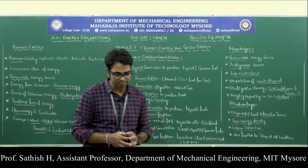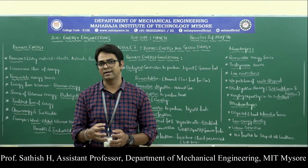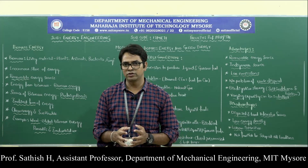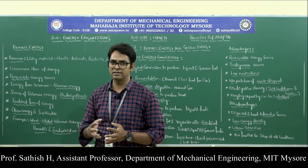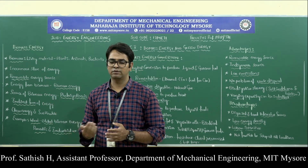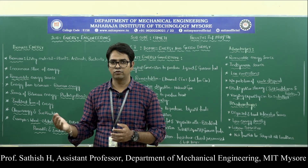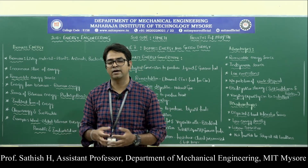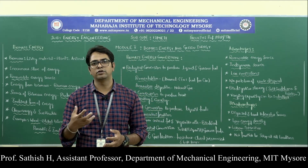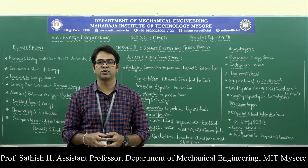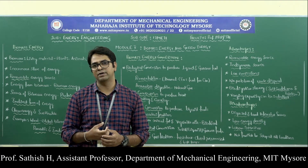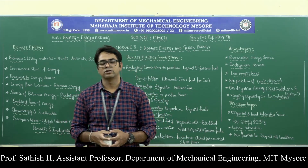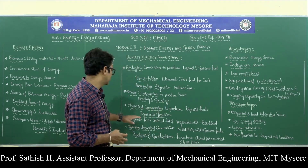For example, if we have peanuts or groundnuts, they can be chemically processed. Peanuts and groundnuts come from plants, which produce their energy using photosynthesis, so peanuts and groundnuts are examples of biomass. When you do chemical processing of peanuts or groundnuts, you get biodiesel. That biodiesel can be used to run vehicles. This is about chemical conversion.